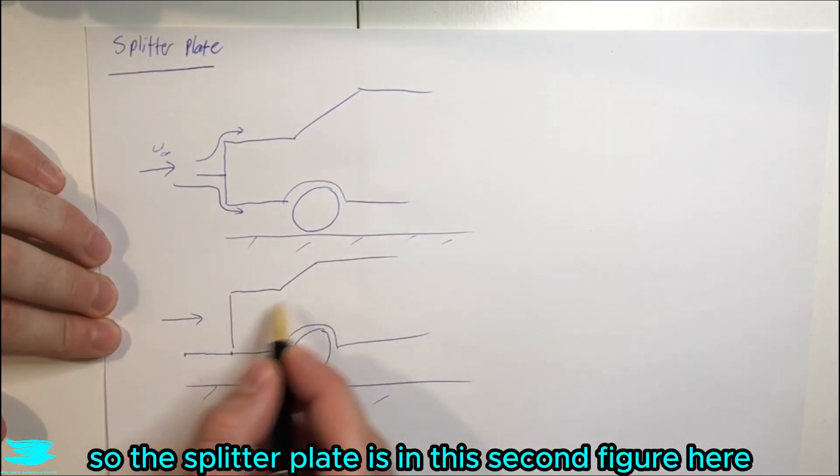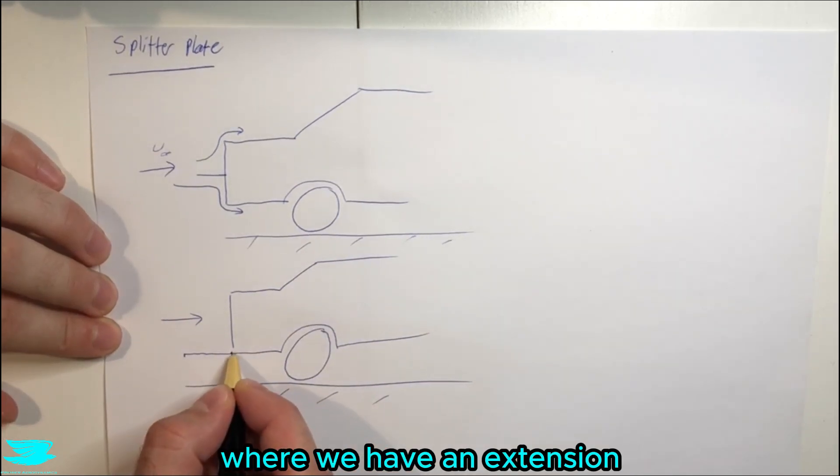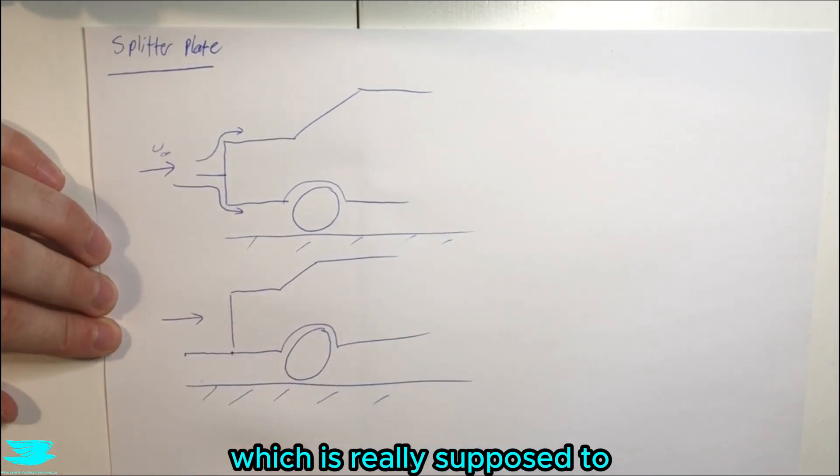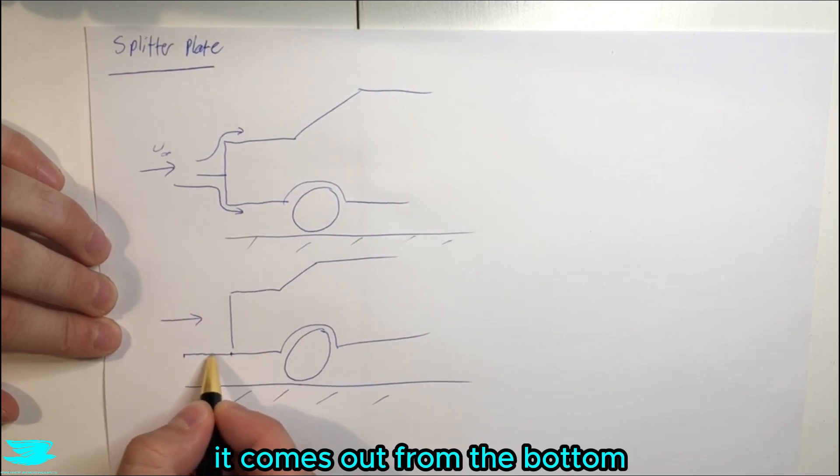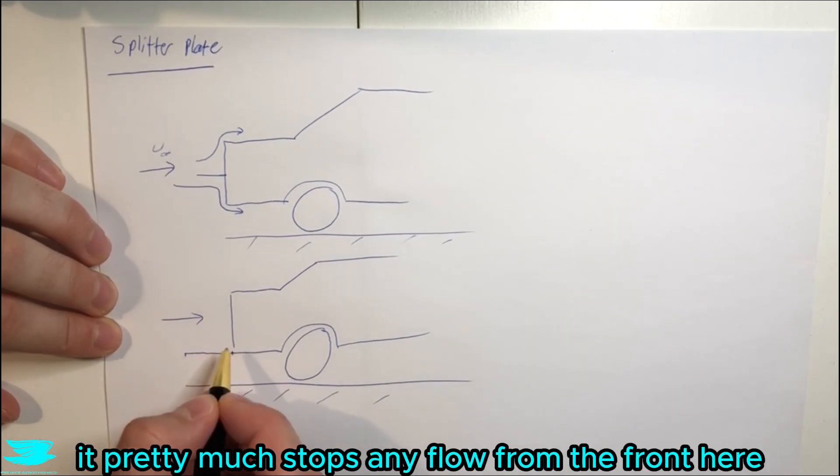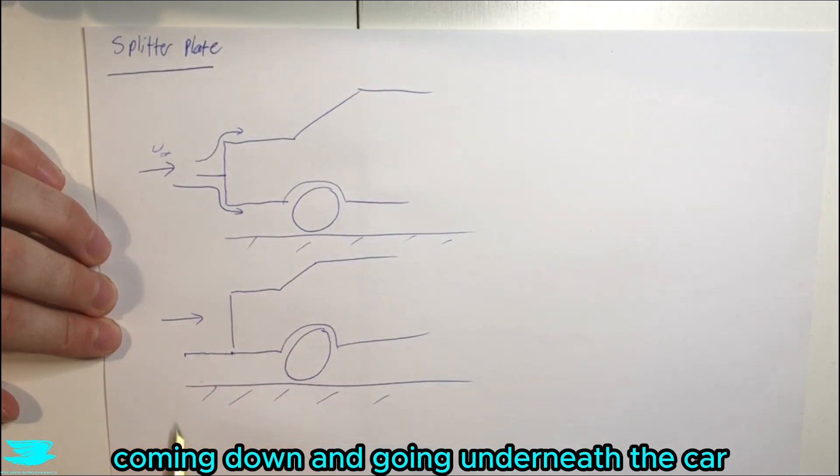So a splitter plate is in this second figure here where we have an extension which is really supposed to be very flat and sharp. It comes out from the bottom, and what this does is it pretty much stops any flow from the front here coming down and going underneath the car.